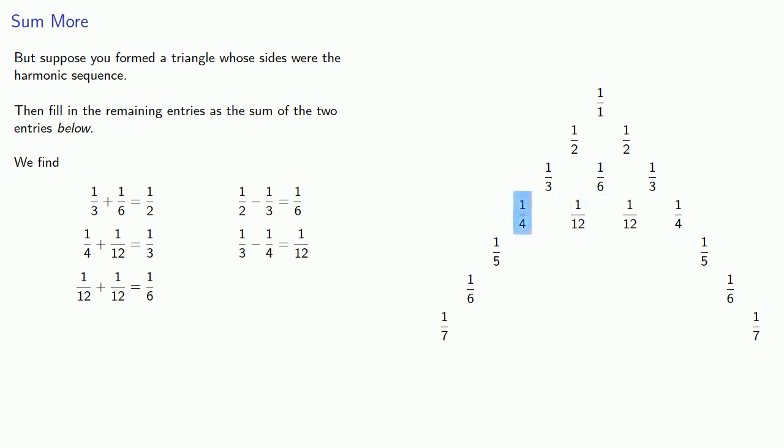This 1 quarter is 1 fifth plus something, which works out to 1 twentieth. This 1 twelfth is 1 twelfth plus something, and so we find that. And we can fill out the rest of the entries in the harmonic triangle.